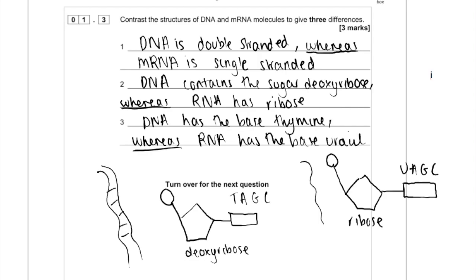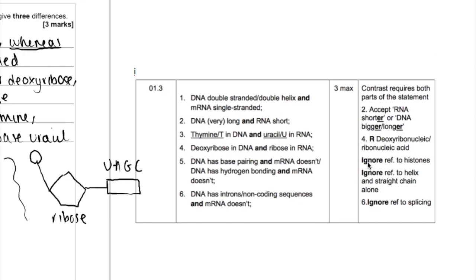Looking at the mark scheme: DNA is double-stranded compared to single-stranded RNA; DNA has thymine whereas RNA has uracil; and DNA has deoxyribose sugar whereas RNA has ribose. Other valid answers include: DNA is long and RNA is short - that's directly stated on the specification, because DNA contains many genes whereas mRNA is just a copy of one gene. DNA has base pairing and hydrogen bonding whereas mRNA doesn't. And a slightly less obvious one: DNA has introns whereas mRNA doesn't - introns are the non-coding regions. When mRNA is made, the entire gene is copied including introns and exons, but the introns are removed via a process called splicing.